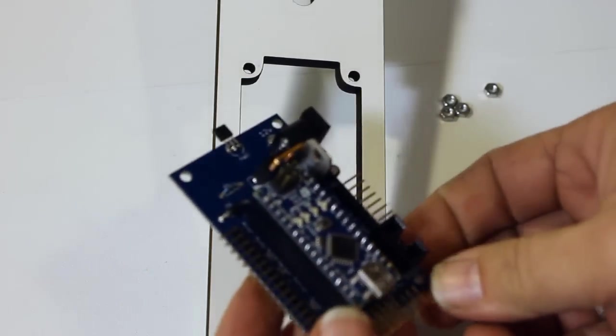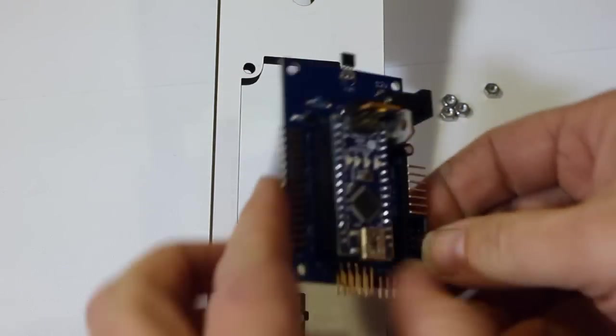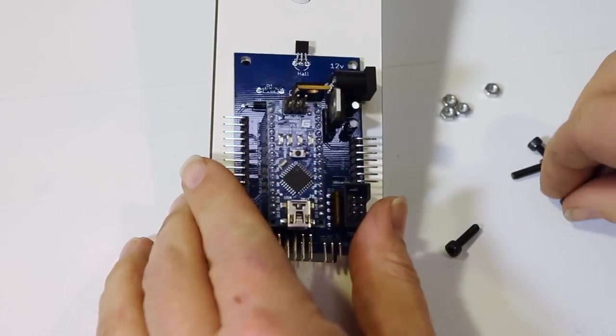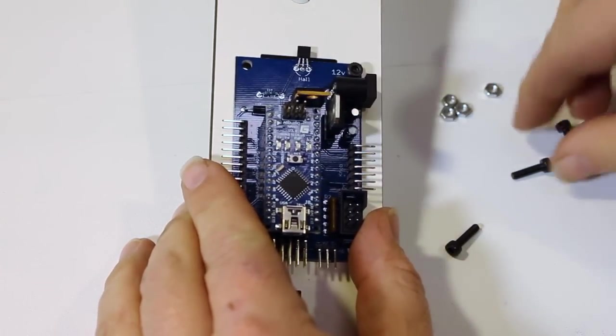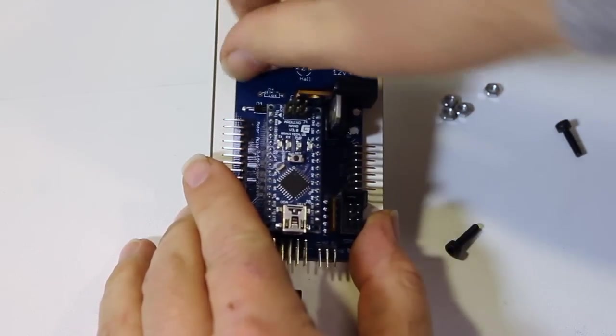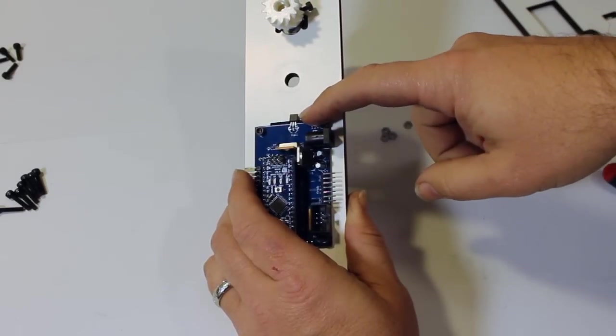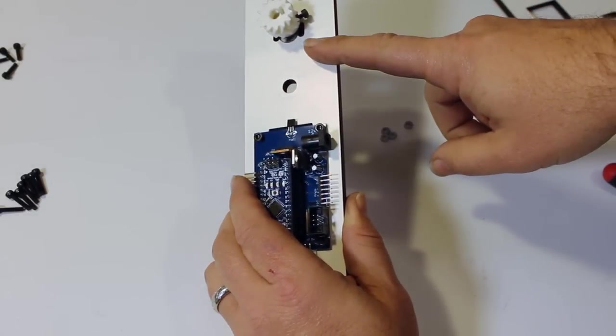Take the control board and four of the 12mm screws and mount it into the holes near the bottom of the board. Make sure that the Hall sensor, which is a little black square, is facing the motor.